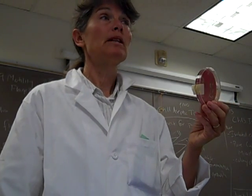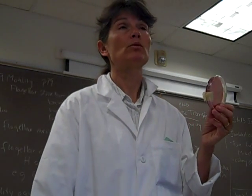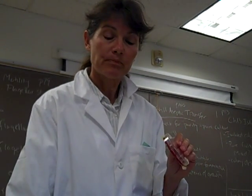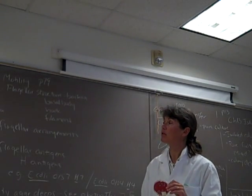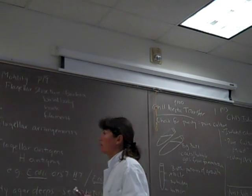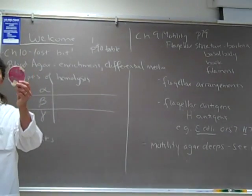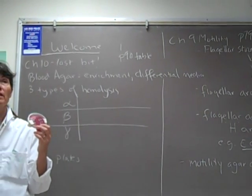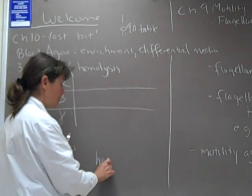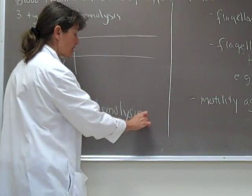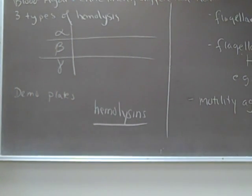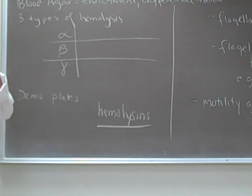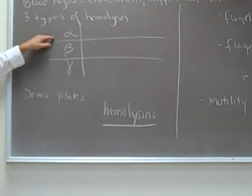In addition to being enrichment media, blood agar is also a differential media. It lets us differentiate between bacteria that cause different kinds of hemolysis. Hemolysis literally means blood lysing, and we're specifically talking about the lysis or breaking open of red blood cells. A general term for substances that microbes make that cause hemolysis are called hemolysins. Depending on the hemolysin, different microbes will cause different types of hemolysis, and we can use this to help differentiate different types of bacterial pathogens.